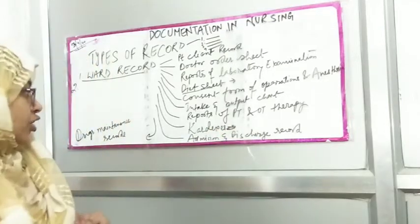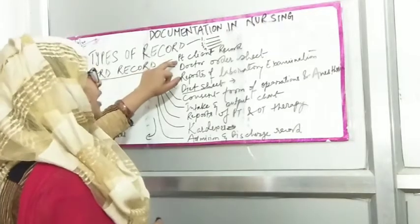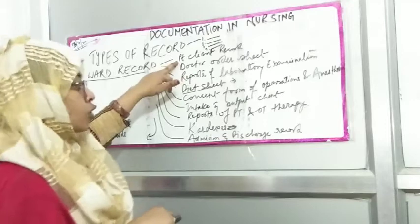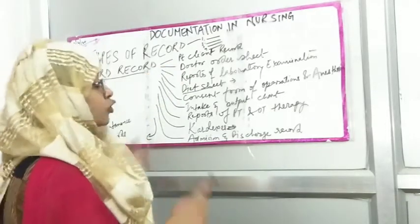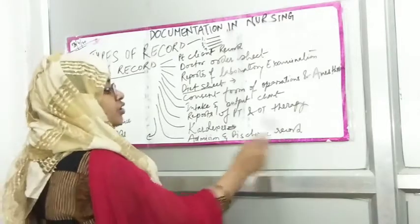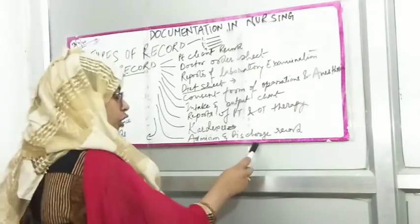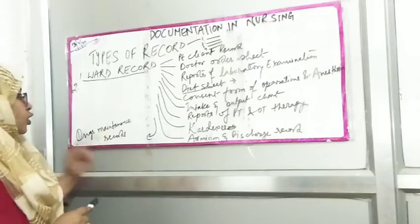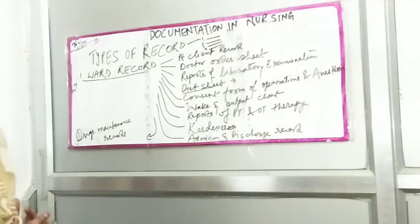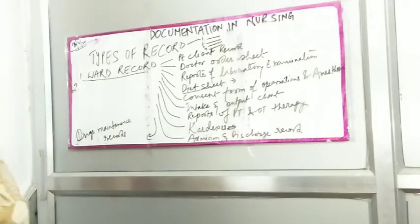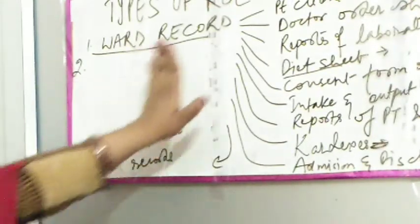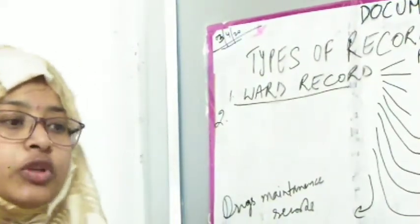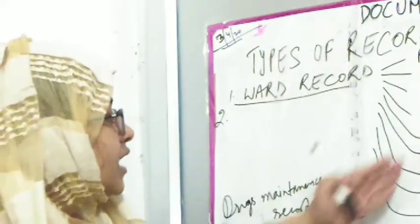When it comes to admission and discharge records, you document whether the patient was admitted from OPD, emergency, or after a procedure. Drug maintenance records document whether drugs were given IV, orally, sublingually, or in what dosage. The ward record is basically the complete file kept for every patient.